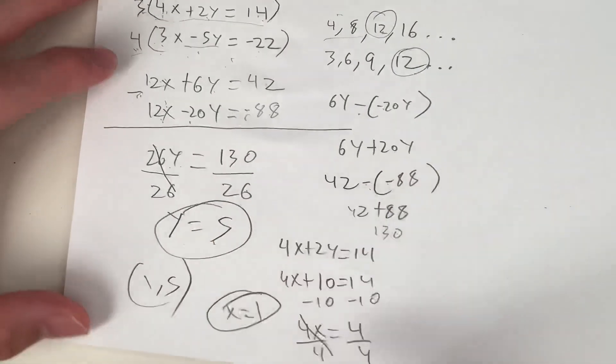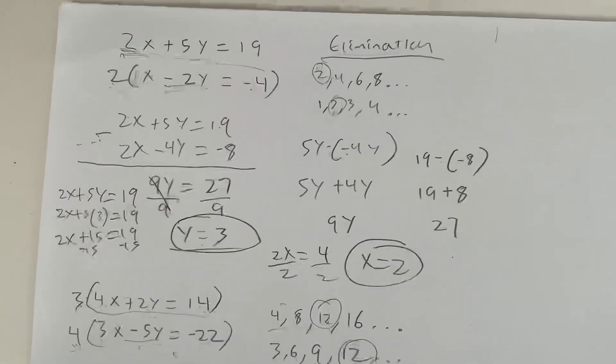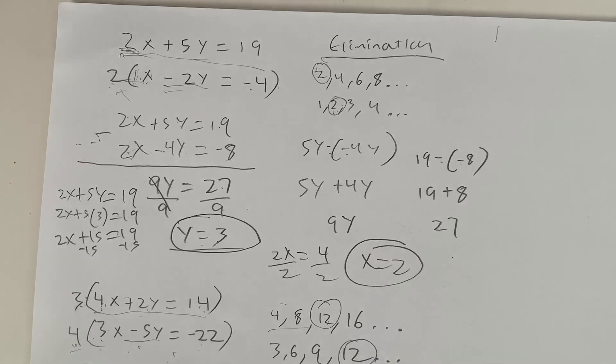And if you want to write your answer as an ordered pair, it's (1, 5). So this is how you solve systems of equations using elimination. In the next video we might go over substitution or other processes. So see you guys next time. Thank you guys for watching.